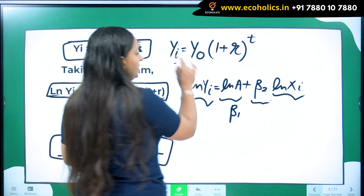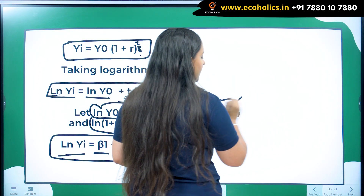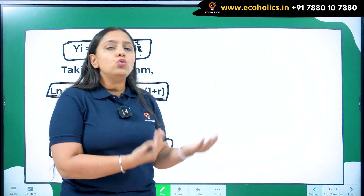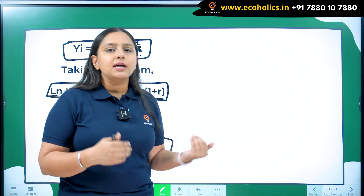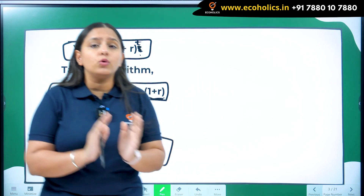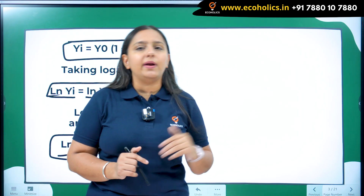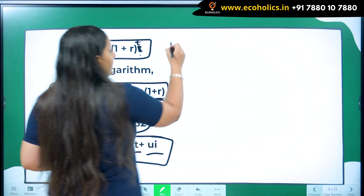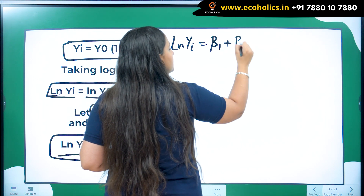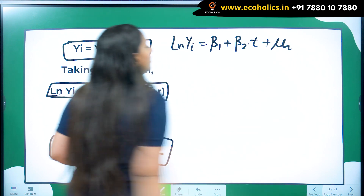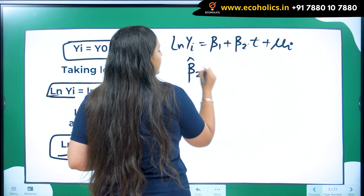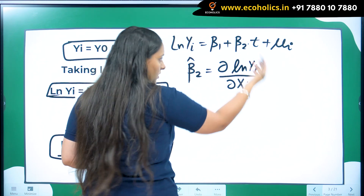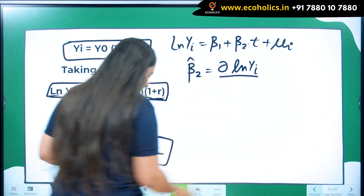What will be the interpretation of beta_2? That is of the most importance. In most objective or subjective papers you are given a model and asked what change in the dependent variable results from a given change in the explanatory variable — so understanding the interpretation of beta_2 is really necessary. Beta_2 always tells you the change in the dependent variable log y_i due to the change in the explanatory variable t.